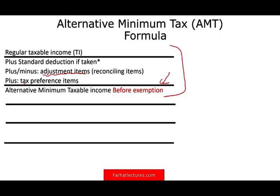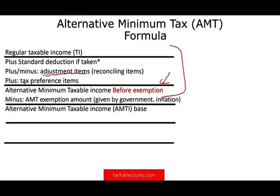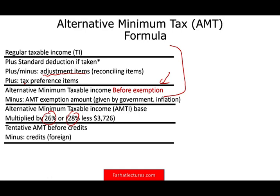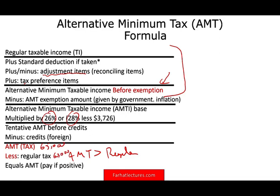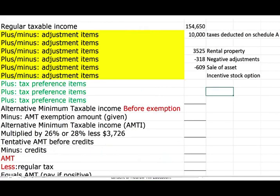Then we'll have a whole session about exemptions. We'll deduct our exemption that's given by the government subject to inflation every year. Then we come up with alternative minimum taxable income base. We multiply that base by either 26 or 28 minus 3726, and you will see why. Then we come up to our tentative AMT before credit. If we have any credits — not much, but if we have foreign credit, we deduct foreign credits — and we come up with our AMT tax. Now we compare our AMT tax to our regular tax. If AMT tax is greater, we pay the difference. So if the AMT tax is $65,000 and our regular tax is $60,000, we have to pay the balance of $5,000.